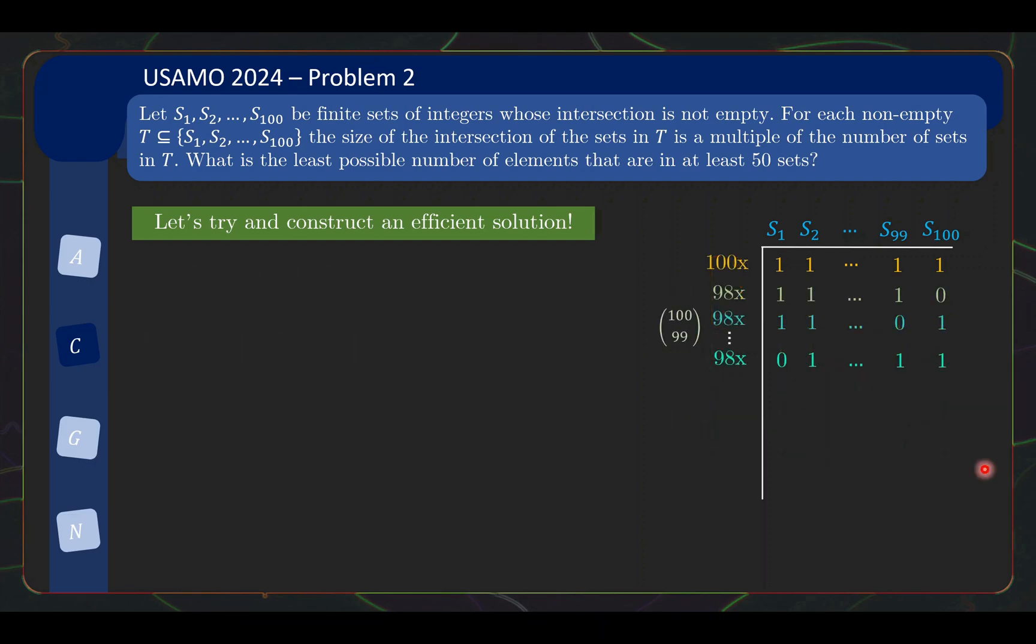Now, I'm going to simplify the way I present my table so that I have more space to put more things. So when I put a 100x here, it means there's 100 elements with this pattern of 1 and 0, this pattern of set membership. So as we saw earlier, for each collection of 99 sets, we need 98 common elements that belong to only these 99 sets. And there's 100 choose 99 of these different patterns. Now let's move on to the next level of 98 sets.